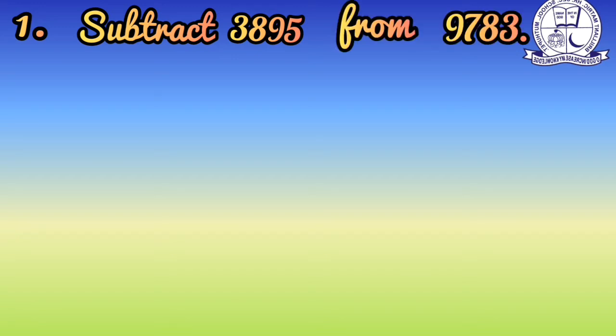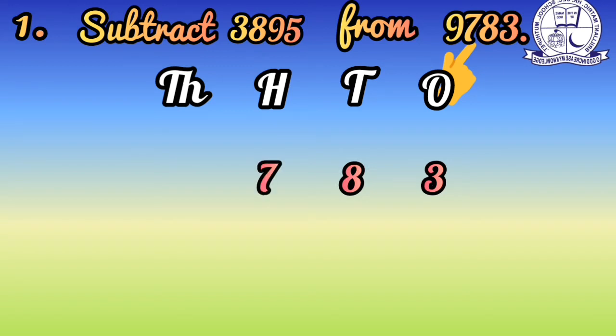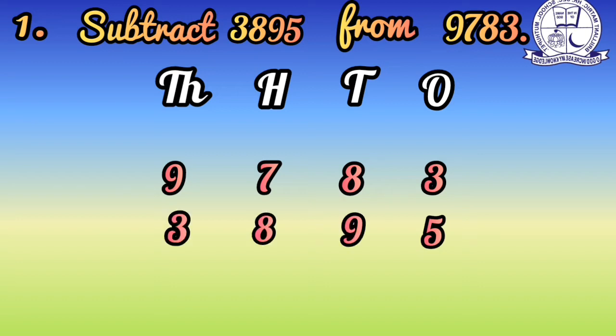First, arrange the given numbers according to their place values. Write the biggest number on top: nine thousand seven hundred and eighty-three (9783). Below it, write three thousand eight hundred and ninety-five (3895). Place value columns: ones, tens, hundreds, thousands. 9783: ones=3, tens=8, hundreds=7, thousands=9. 3895: ones=5, tens=9, hundreds=8, thousands=3.